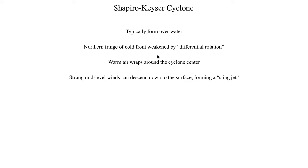The winds inside the sting jet can be quite intense. On a typical cold front you're typically going to have at the strongest 20 to 30 mile per hour winds, maybe with some gusts higher than that. Winds behind cold fronts don't typically get much stronger than that, but the winds inside a sting jet often exceed 40, 50, even 60 miles per hour. In fact in some extreme cases the winds can exceed hurricane strength. There was a case of a Shapiro-Kaiser cyclone moving toward Scotland where weather stations recorded 80, 90, even 100 mile per hour winds. The winds inside the sting jet of a Shapiro-Kaiser cyclone can be quite intense.